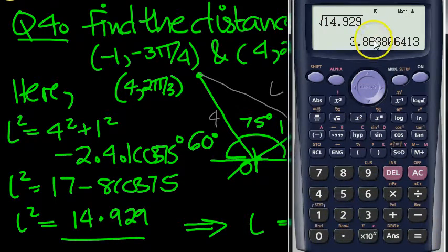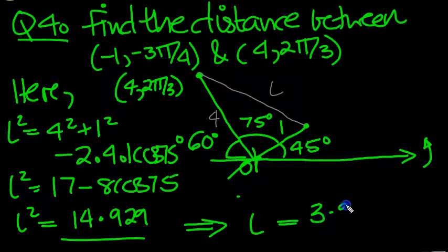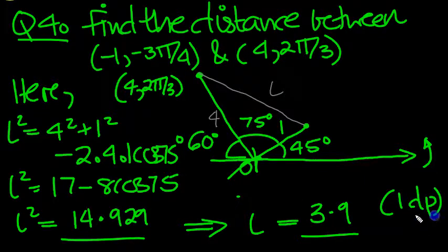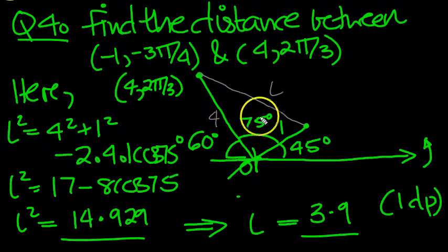3.86, so we'll just round it to 3.9. And that was the distance in units, and that's to 1 decimal place. So the answer is 3.9 is the distance.